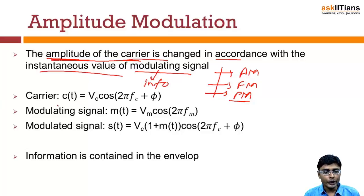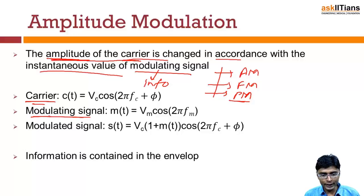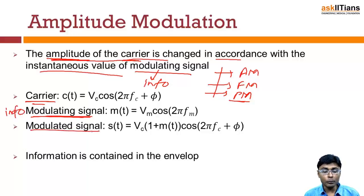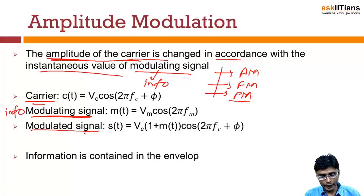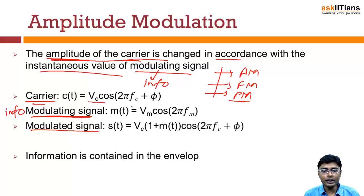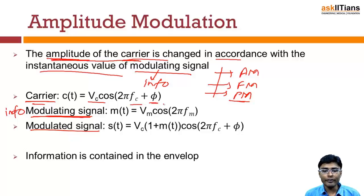There are three important signals to remember. One is the carrier signal, another is the modulating signal or information signal, and the third is the modulated signal — that is the signal after modulation. The carrier signal has amplitude vc, frequency fc, and phase phi.